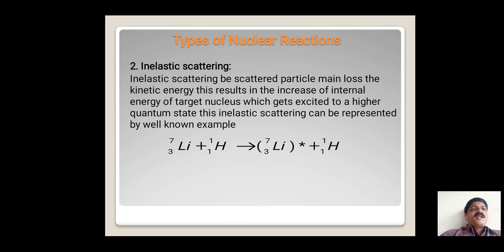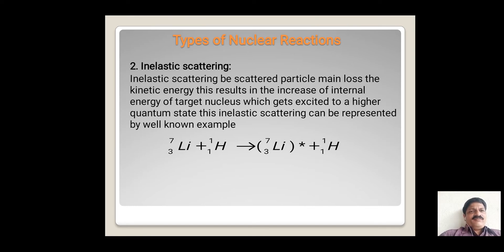The internal energy increases in the form of kinetic energy of the target nucleus, that is lithium. This is represented with a star symbol, which indicates that lithium is in the excited state — a higher quantum state. Such types of nuclear reactions are known as inelastic scattering nuclear reactions. The incident nucleus transfers energy to increase the internal energy of lithium, bringing it to its upper energy quantum state.